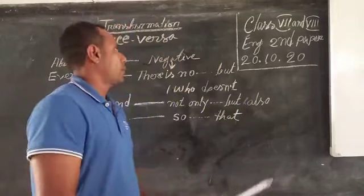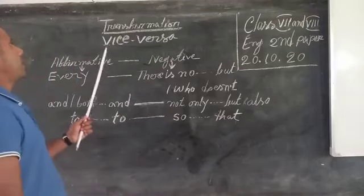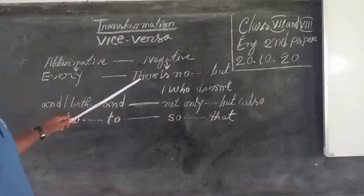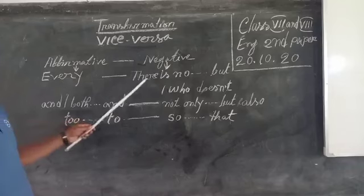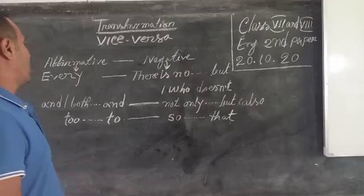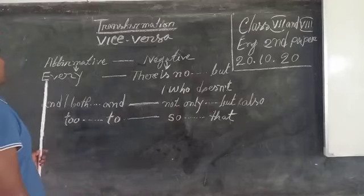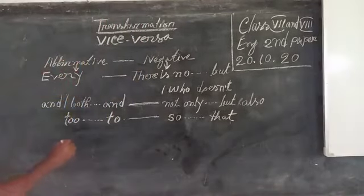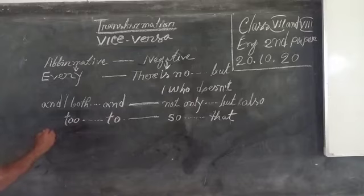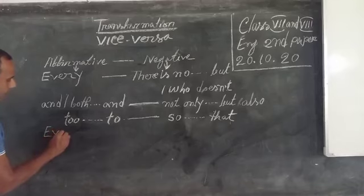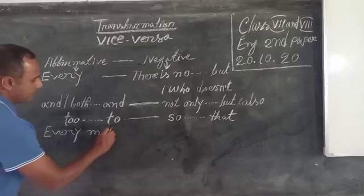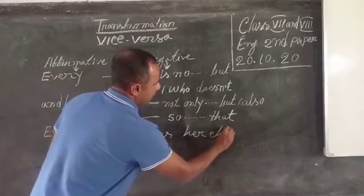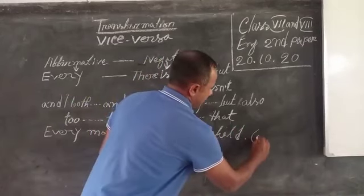Today, dear students, look at the board. I have written the vice versa of affirmative to negative. In this case, there is no verb. We make the negative sentence using 'there is no...verb'. Here is an example: 'Every mother loves her child.' Make it negative.